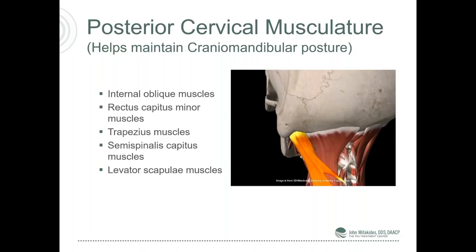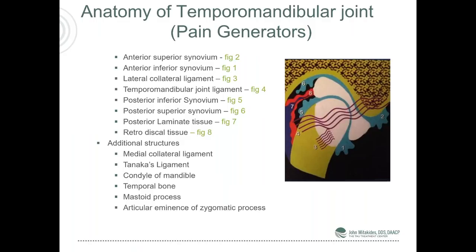Let's talk about the structure of the joint itself. This is a synovial joint — there's fluid in between the joints. There are superior, inferior, posterior inferior, and posterior superior synoviums, all of which will generate pain when the condyle is out of position. Another situation is that you have posterior lamina tissue — if the head of the condyle is pushed to the rear, for example by closing and hitting the back of your front teeth before your back teeth, the jaw will actually move to the rear and compress this posterior lamina. When that happens, that's when you get the fullness and itching in the ear itself.